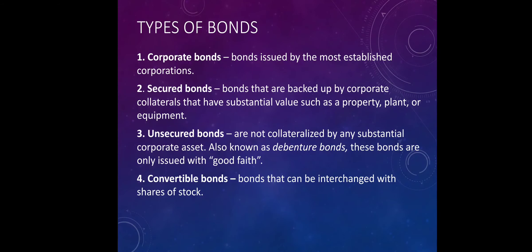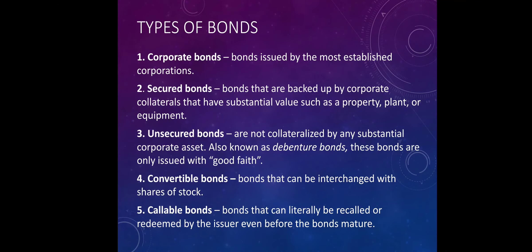Fourth is convertible bonds — this type of bond can be interchanged with shares of stocks if the bondholder chooses to. The fifth is called callable bonds. Callable bonds are bonds that can be literally recalled or redeemed by the issuer even before the bonds mature, meaning they could be payable by the bond issuer even before the maturity date.